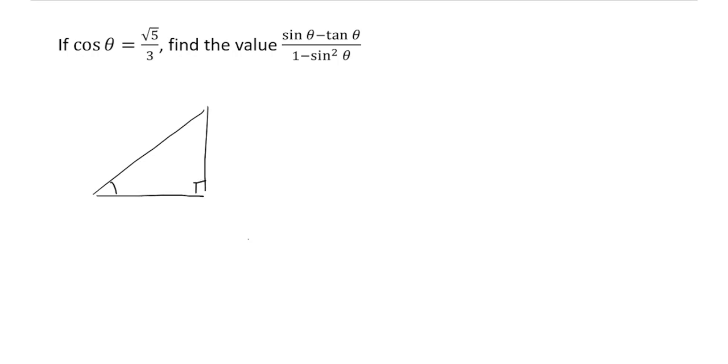Here, it's a right angle triangle. I'm going to call that angle there theta. Now here, instead of sine theta, we've got cosine theta. Cosine is adjacent over hypotenuse. So we can label the adjacent side as root 5 and the hypotenuse as 3.